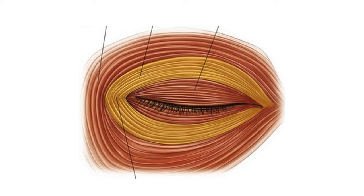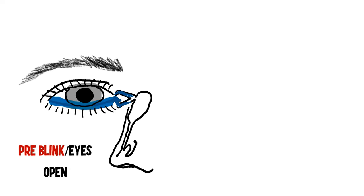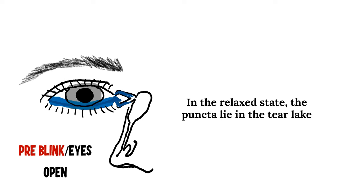Before we start, it is very important for us to recollect the anatomy of the orbicularis muscle, which was told in detail in the video on anatomy of eyelid. We know that our orbicularis basically has a preseptal portion and a pretarsal portion, present in front of the orbital septum and the tarsal plate respectively. In the pre-blink stage, when our eyes are open, the orbicularis muscle is in a relaxed state, and as it relaxes the puncta will lie in the tear lake in very close approximation to the tears, so tears will actually enter the puncta and canaliculi very easily.